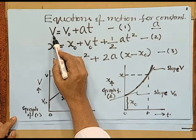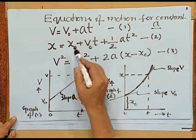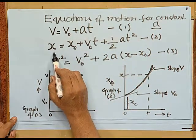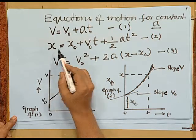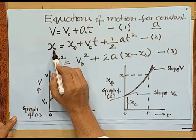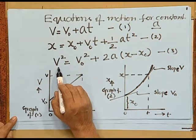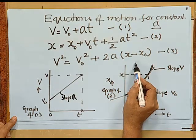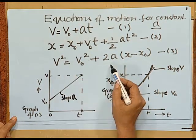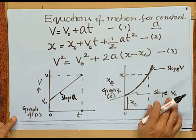The equations of motion for constant acceleration, as we have seen earlier, are: equation 1, the variation in velocity v = v₀ + at, where a is the constant acceleration. Equation 2 gives coordinate x = x₀ + v₀t + ½at², where position x is a function of time. The third equation gives velocity as a function of displacement: v² = v₀² + 2a(x - x₀). Equation 3 is obtained by combining equations 1 and 2, eliminating t.